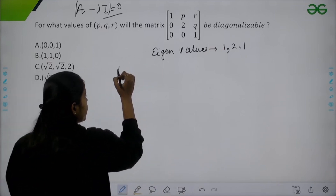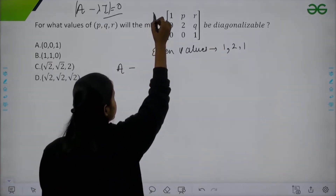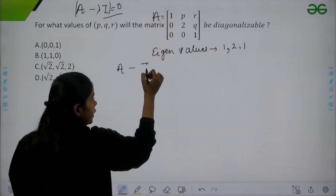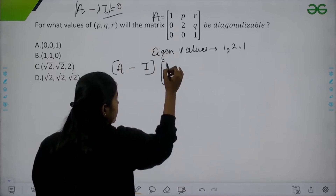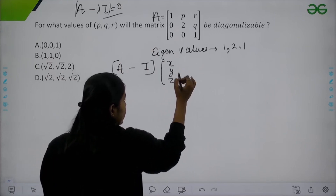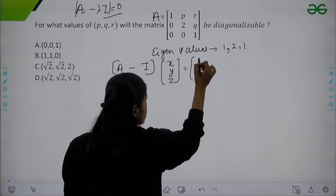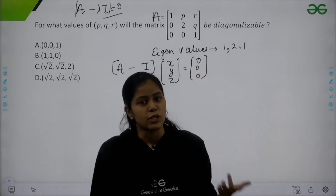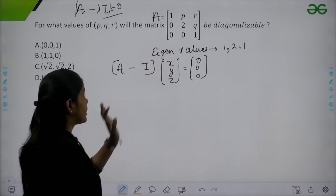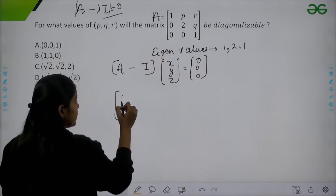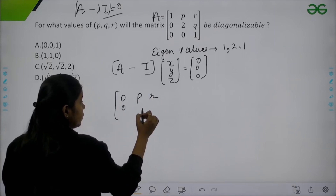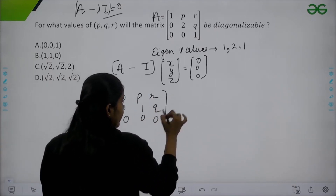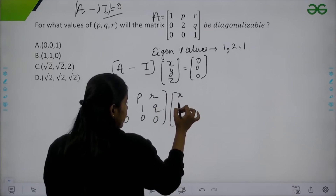To find the eigenvector corresponding to eigenvalue 1, we solve (A minus I) times the vector [x, y, z] equals [0, 0, 0]. Let's compute A minus I: the resulting matrix is [0, P, R; 0, 1, Q; 0, 0, 0]. This is our A minus I matrix — everything else remains the same.